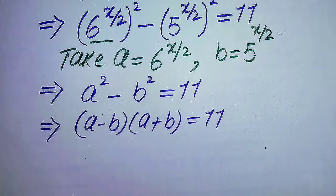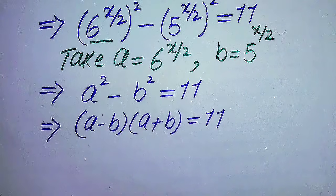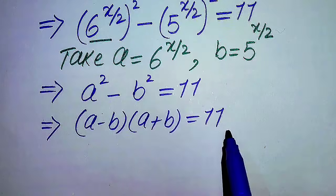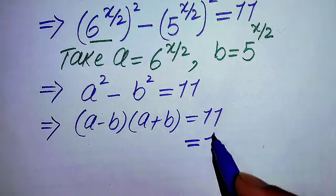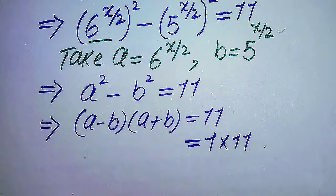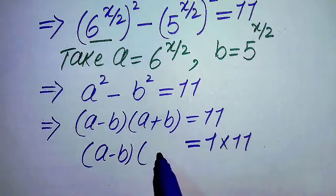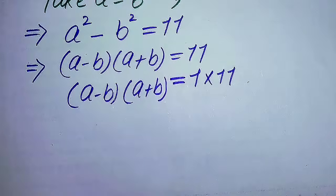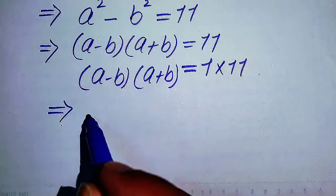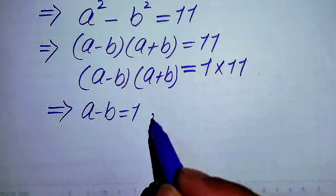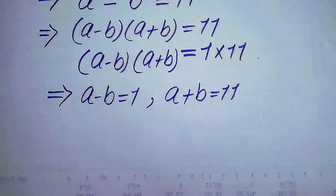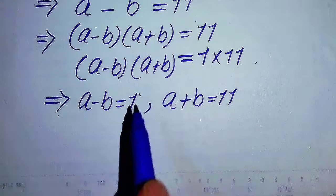On the left-hand side we have two factors multiplied together, but on the right-hand side we have only one factor. We need to convert the right-hand side into a product of two factors by finding two positive integers whose product is 11. The only possibility is 1 times 11 equals 11. So (a minus b)(a plus b) equals 1 times 11. Comparing both sides gives us a minus b equals 1 and a plus b equals 11.